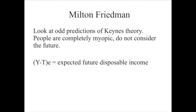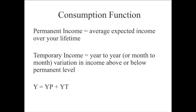To modify the Keynesian theory to be more realistic, we introduce some terminology. We're going to denote expected future disposable income by Y minus T with a superscript E, meaning that it's income you're going to get in the future and you've formed expectations or beliefs about what that income level will be.